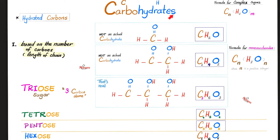Why do we call them carbohydrates? Because they are hydrated carbons. Look at that — you have the carbon atoms and the hydrogen atoms. If that carbohydrate has three carbon atoms, we call it triose. Four carbons: tetrose. Five: pentose. And six is hexose.